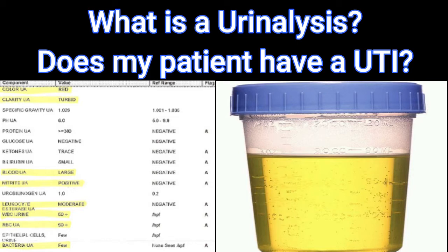Hey guys, it's Sarah here. In this video we're going to be going over a urinalysis — basically analyzing your urine. You can tell a lot from urine: kidney failure, urinary tract infection, kidney stones, acid-base imbalances, GU malignancies, and something as simple as volume status — like if they're dehydrated or not. This is why it's really important to understand how to interpret a urinalysis.